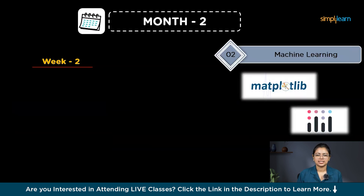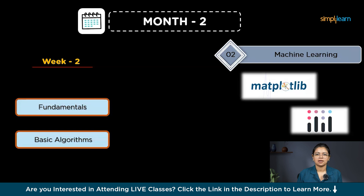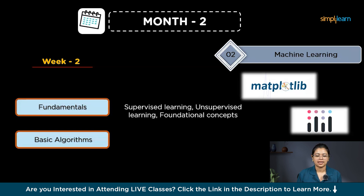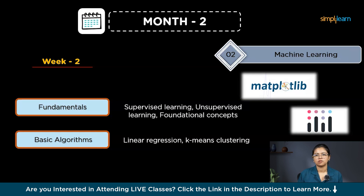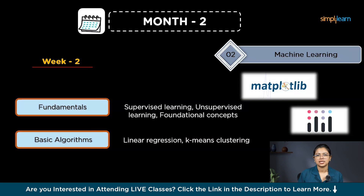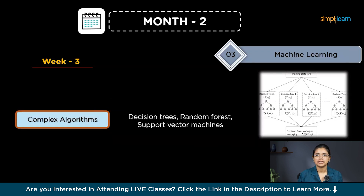Next, start by understanding the basics of machine learning, including supervised learning — where the computer learns from labeled data — and unsupervised learning, where the computer finds patterns on its own. These are foundational concepts that open up many possibilities in data science. Get familiar with key algorithms like linear regression for predicting values and K-means clustering for grouping similar data points.